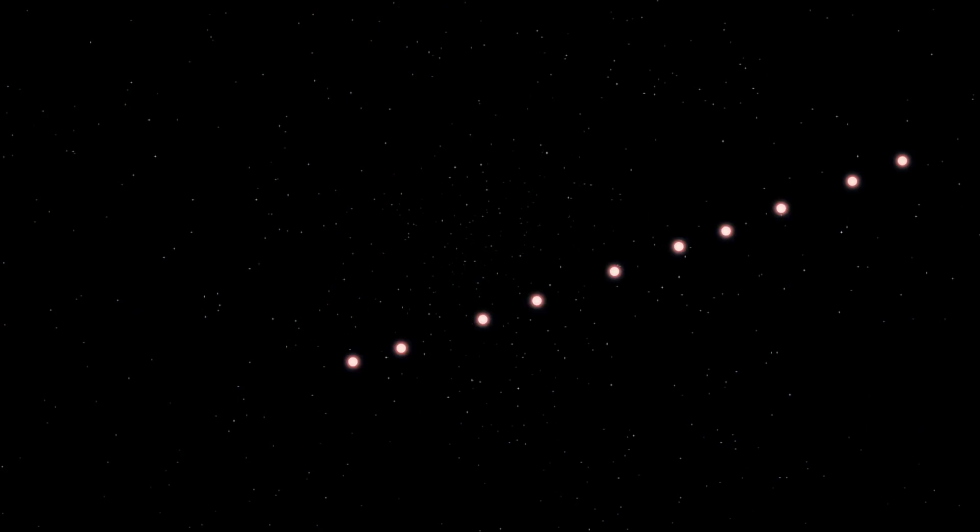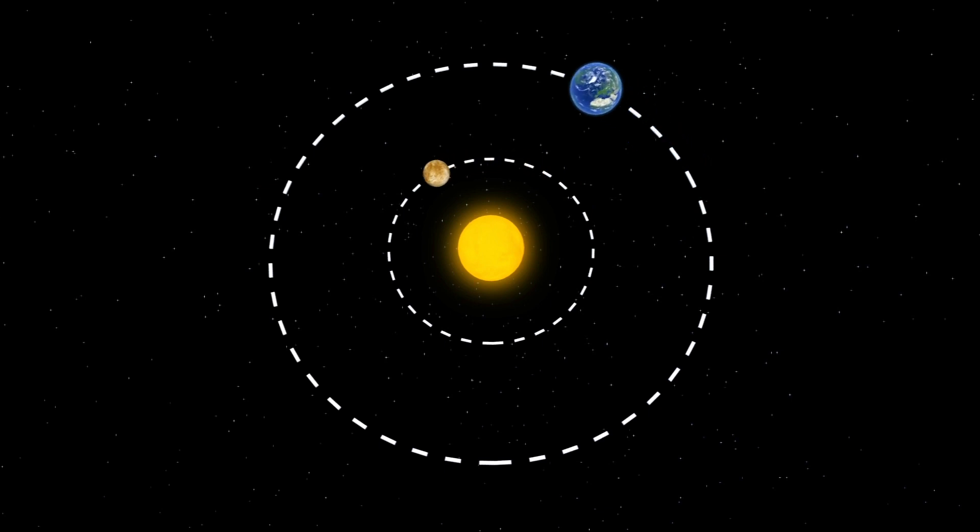When Mercury is in retrograde, it appears as if the planet is moving backwards when viewed from Earth's sky. According to a report from NASA, this is because Mercury completes an orbit faster than Earth does.